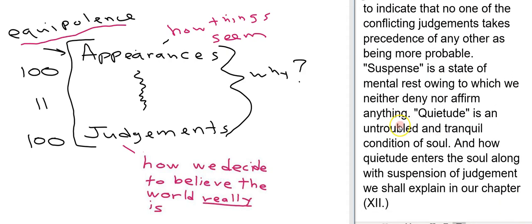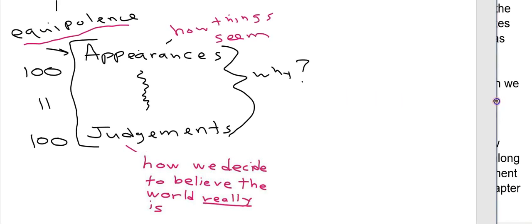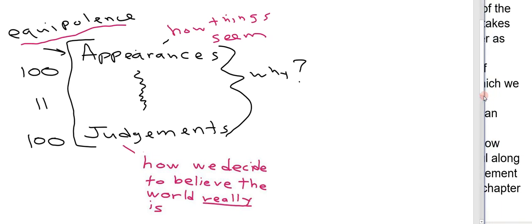Okay mental suspense and then unperturbedness or quietude. So at least two things are supposed to happen here according to Sextus. One is I have mental suspense and that's supposed to be something that we want to achieve out of this equipolence and contrasting of appearances to judgment. And the next is quietude.